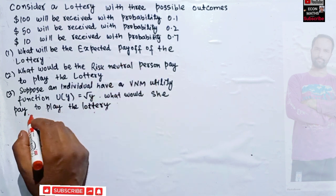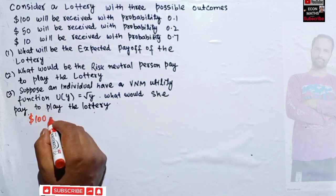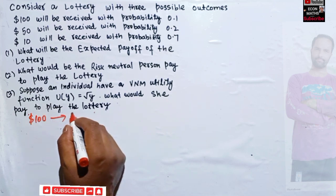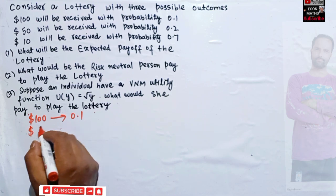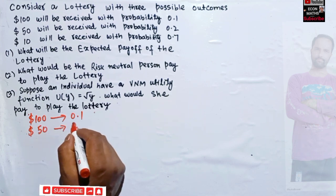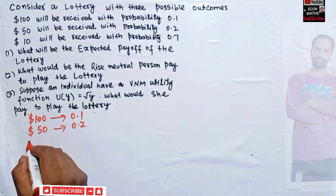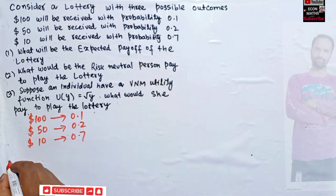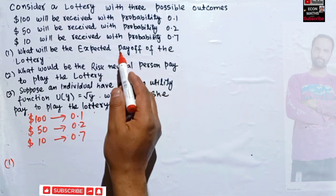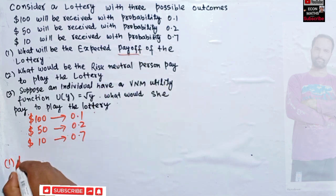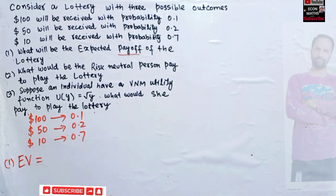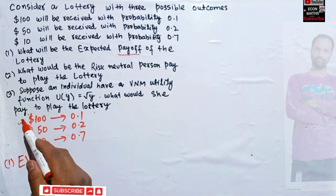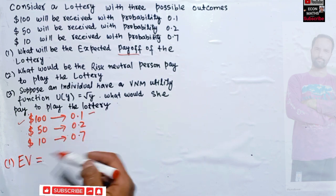To win $100 the probability is 0.1, to win $50 the probability is 0.2, and to win $10 there is a 70% chance. The expected payoff of the lottery is simply the expected value — we multiply each outcome with its probability and sum them up.